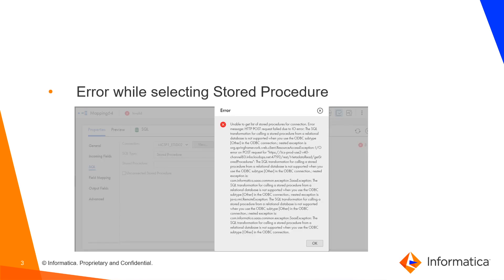You might have come across this error message. It's basically saying unable to get lists of stored procedures for the connection. This typically happens when you have a generic ODBC connection for DB2 and you're trying to access a stored procedure object in SQL transformation.